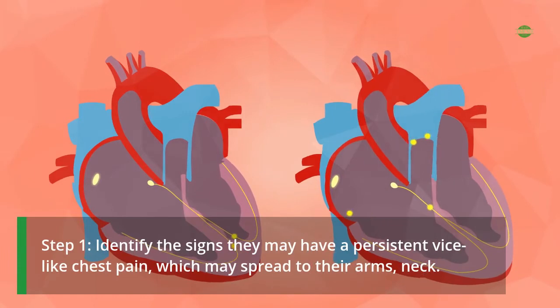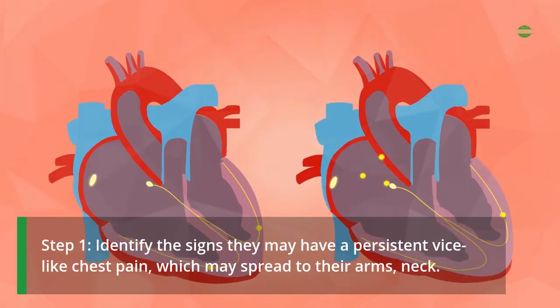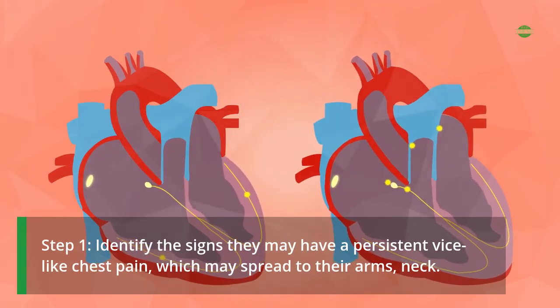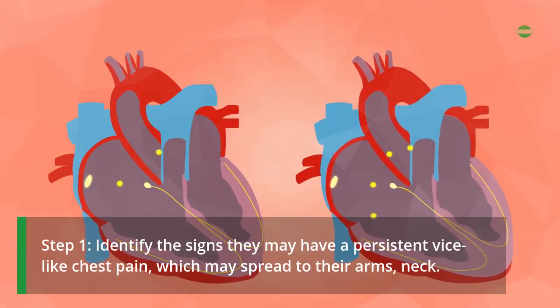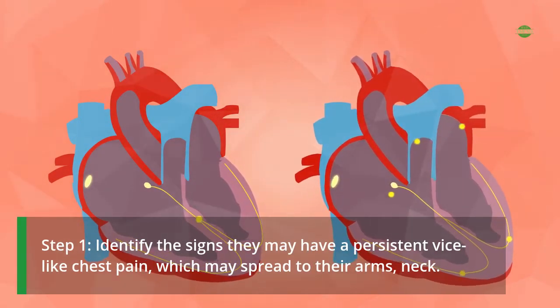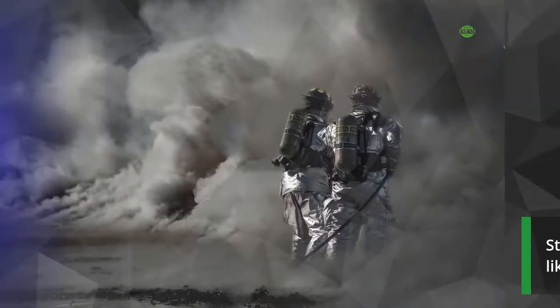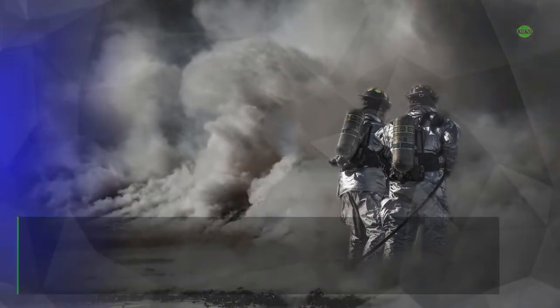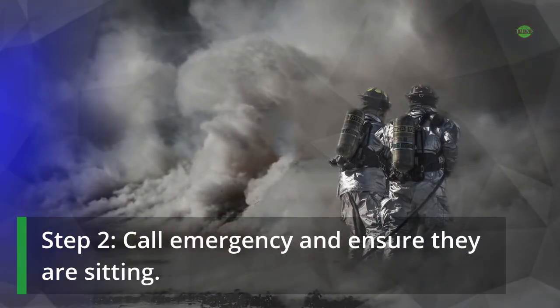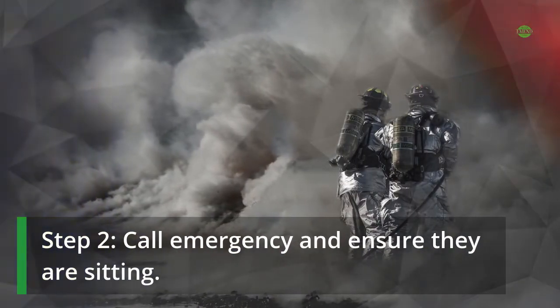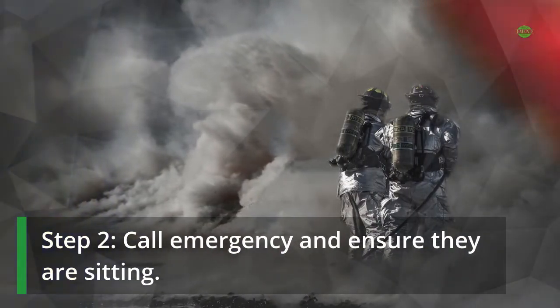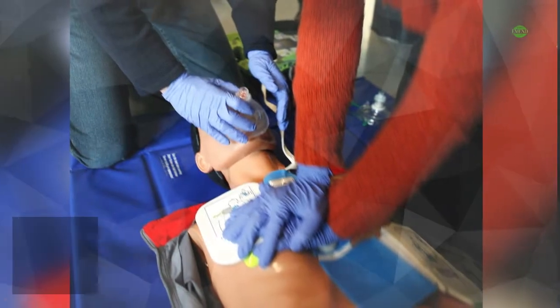Step 1: identify the signs — they may have a persistent vice-like chest pain, which may spread to their arms and neck. Step 2: call emergency and ensure they are sitting.